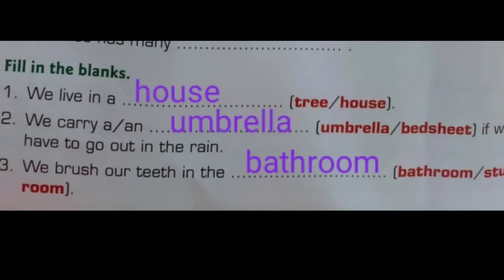Now the last question is fill in the blanks. Number 1: We live in a dash tree or house — answer is house. Number 2: We carry a dash if we have to go out in the rain — answer is umbrella. And last is, we brush our teeth in the dash — and the answer is bathroom.